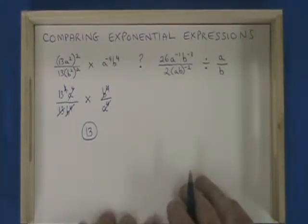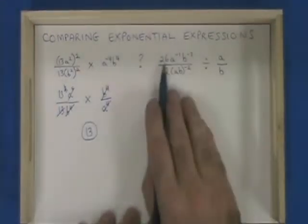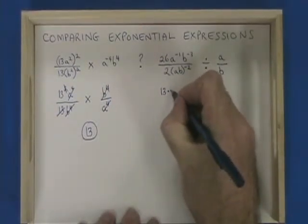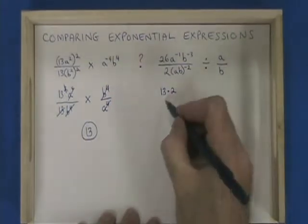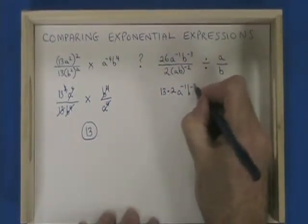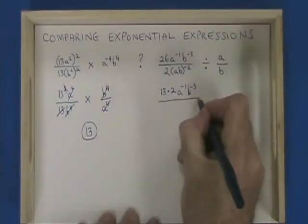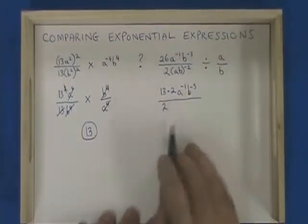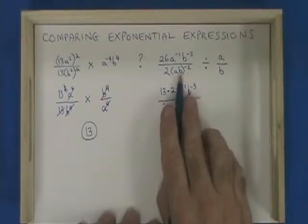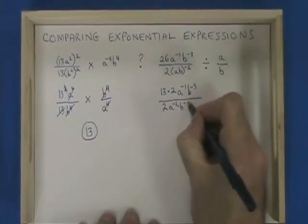On the right side, I'm going to convert 26 into 13 times 2. I'll keep a to the negative 1, b to the negative 3. The 2 stays the same. Applying this negative 2 across the bracket, I have a to the negative 2, b to the negative 2.